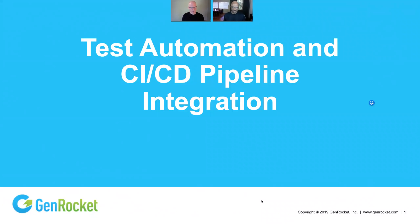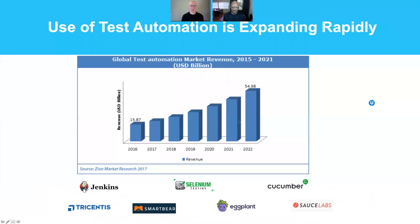We're going to be talking about test automation and CICD pipeline integration. We want to leverage Hysel's expertise in this particular area. We want to remind you why this is so important — we're in a huge, exploding market. Everybody wants to be using test automation, everybody's building out a CICD pipeline. We've understood that only about 4% of the marketplace is 90% automated, so test data is a big barrier in that area.